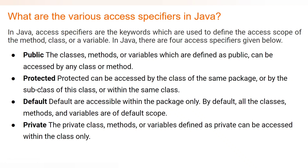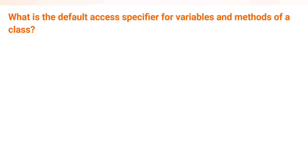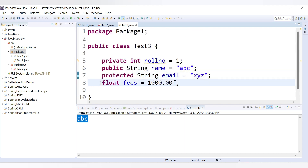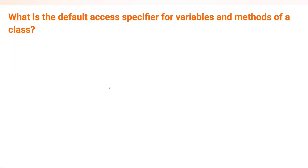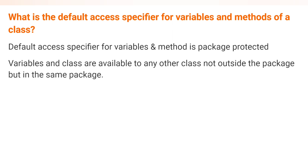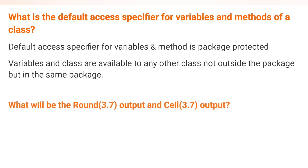Protected can also be accessed by subclasses of that particular class. So let's move to the next question: what is the default access specifier for variables and methods of a class? If you don't provide any access specifier, by default it is of default type, meaning package-protected — it can be accessed inside the package only. Variables and classes are available to any other class within the same package but not outside.